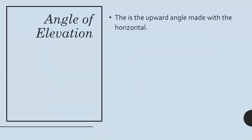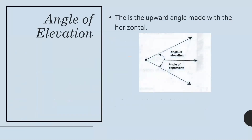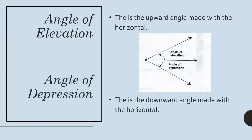The angle of elevation is the upward angle made with the horizontal, while the angle of depression is the downward angle made with the horizontal. To not be confused, just remember: elevate is upward, and depress is downward. That is the difference between angle of elevation and depression.